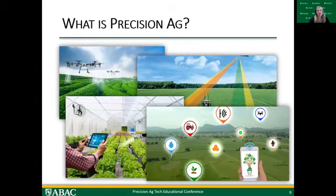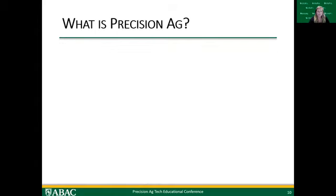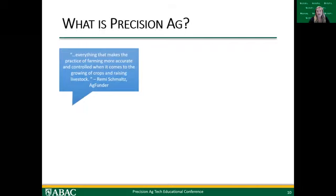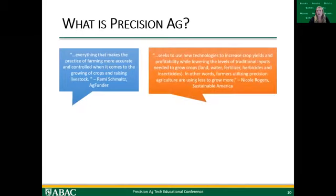Looking at actual definitions of Precision Ag: one says it's everything that makes farming more accurate and controlled when it comes to growing crops and raising livestock — the big idea being accurate and controlled. Another says Precision Ag seeks to use new technologies to increase crop yields and profitability while lowering the levels of traditional inputs needed to grow crops. In other words, farmers utilizing Precision Ag are using less to grow more.